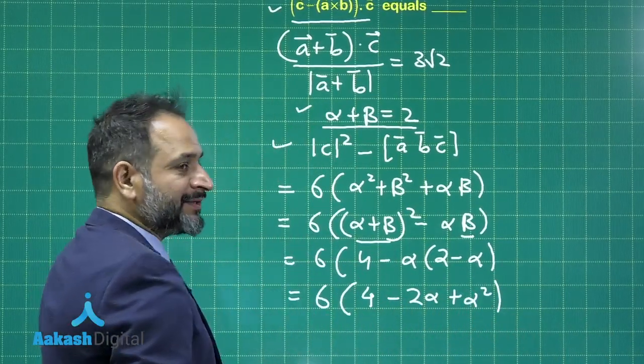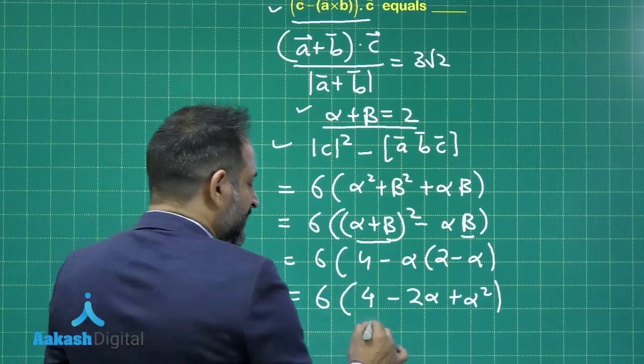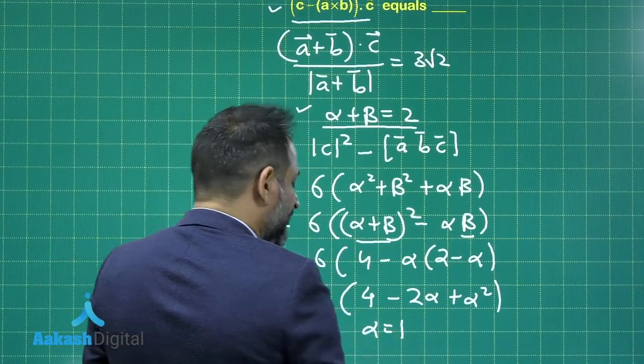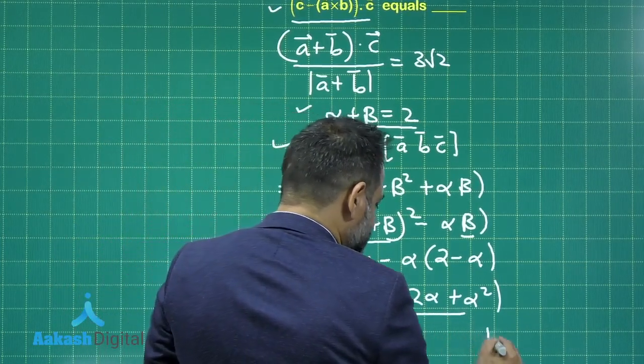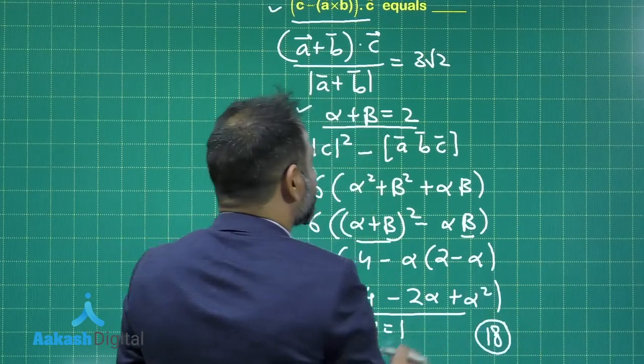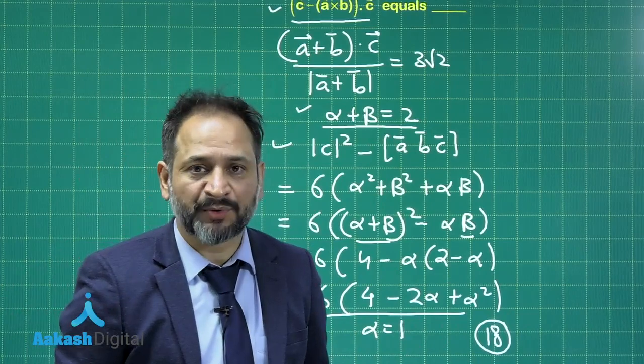Now we can easily calculate the minimum value of this expression. So at alpha is equal to 1, you will get the minimum value and that comes out to be 18. So 18 is the right answer, the minimum value is 18. So here is the next problem.